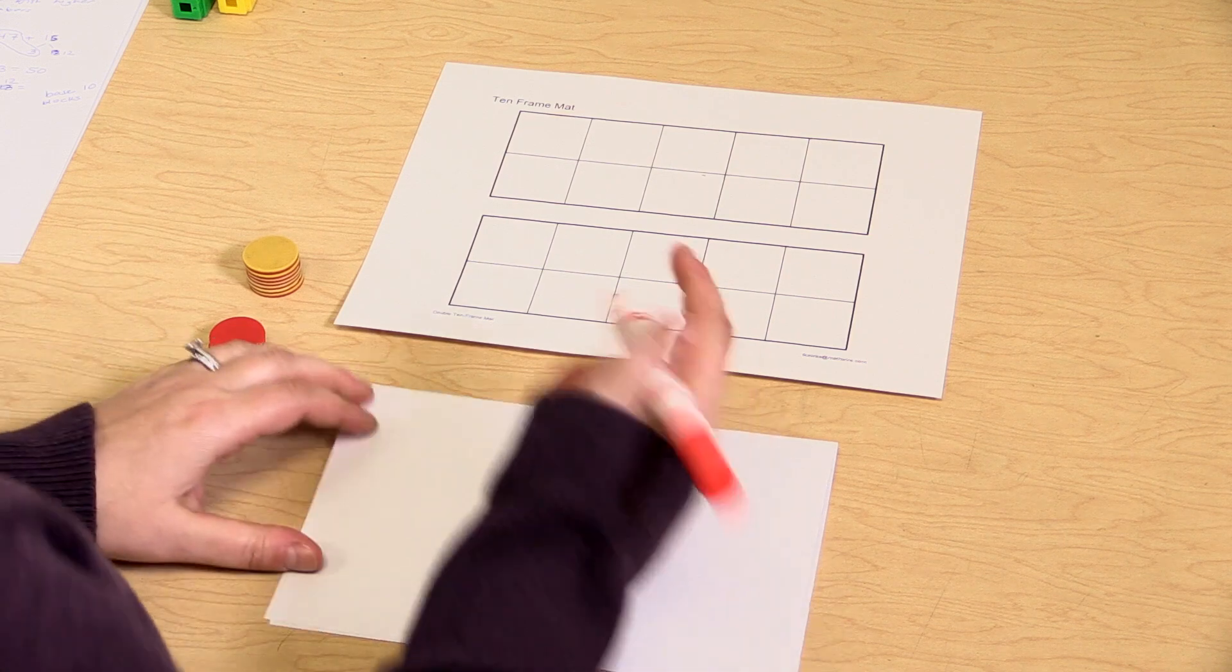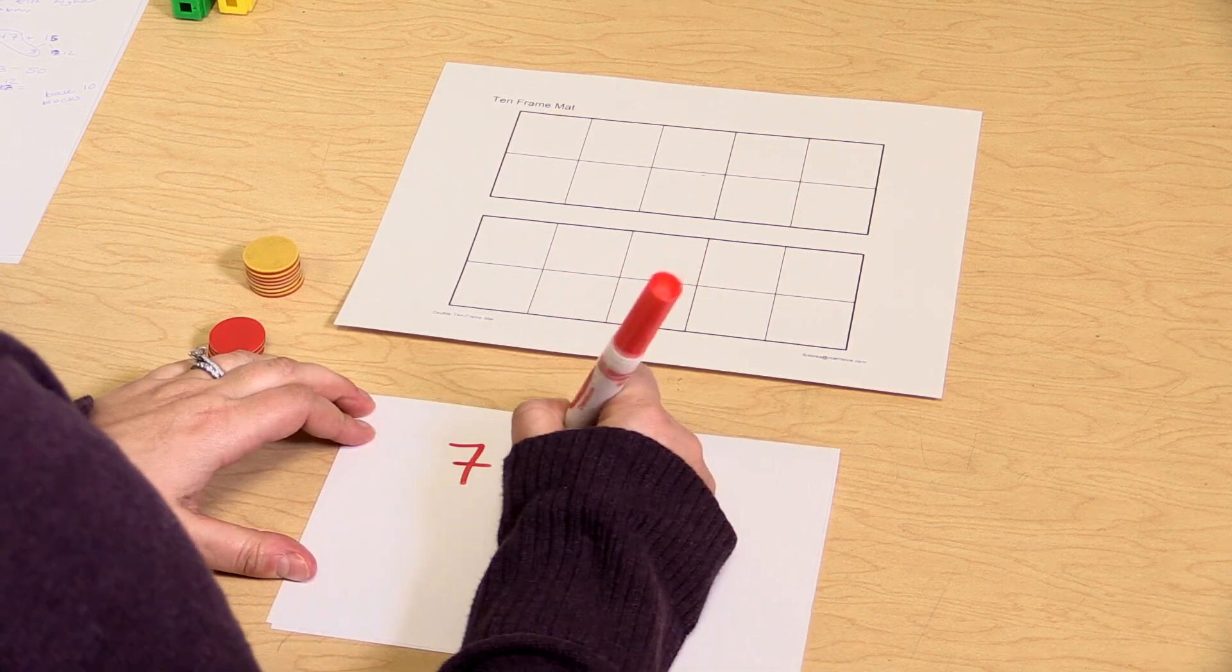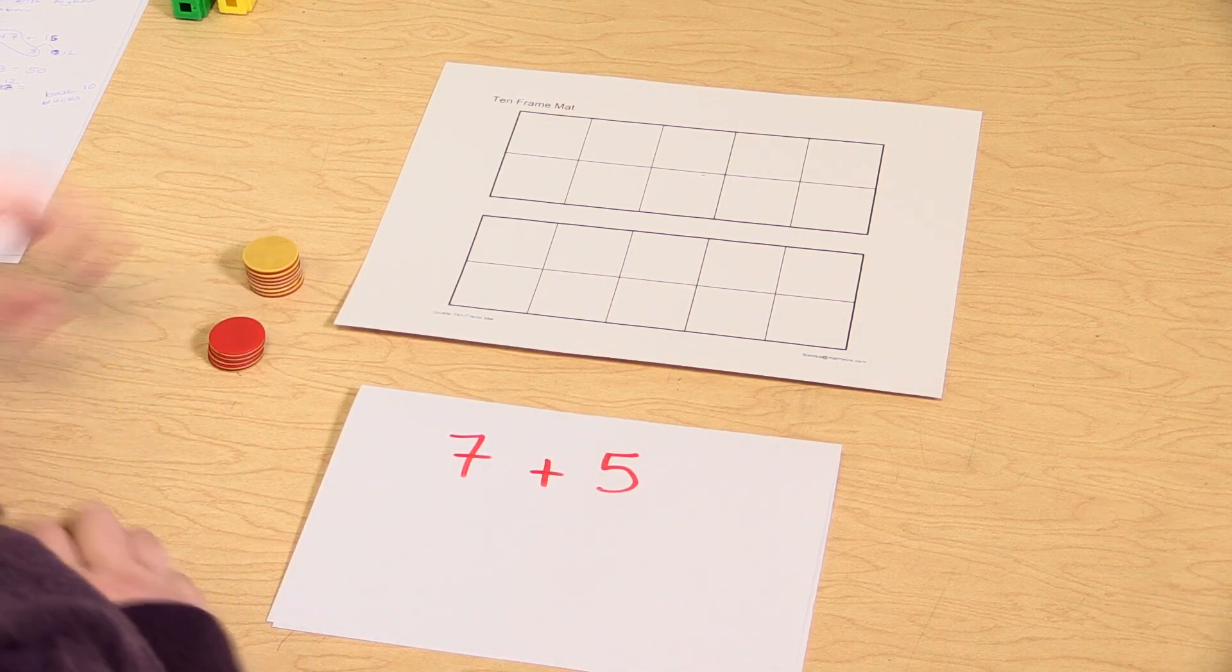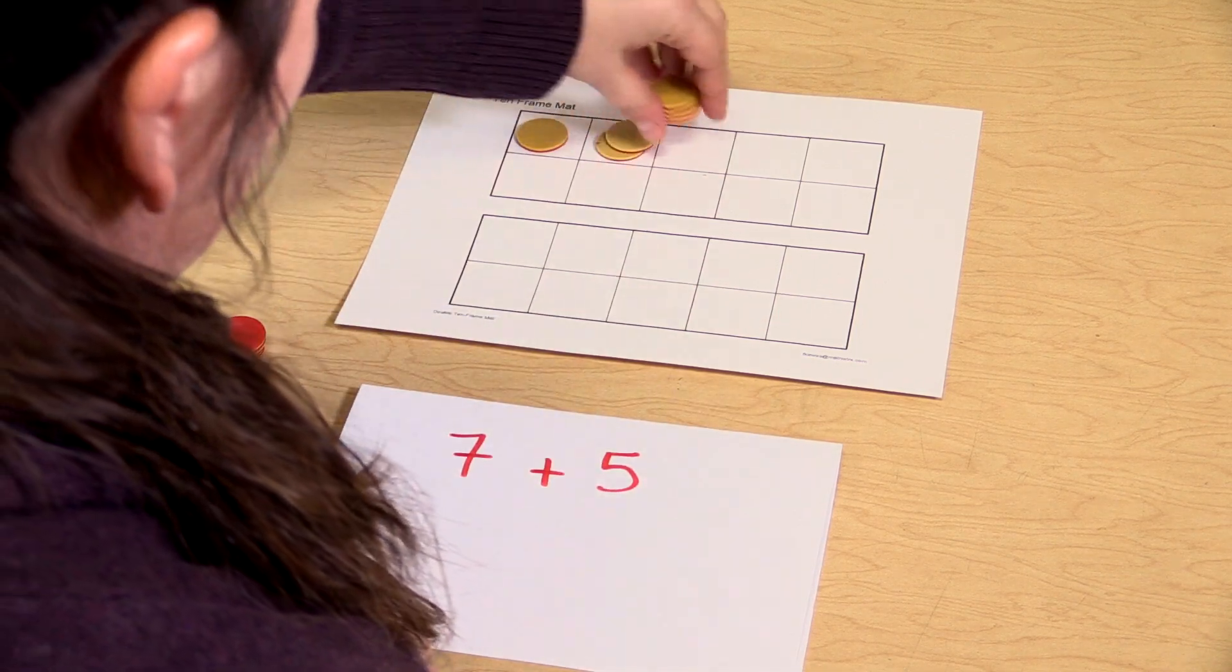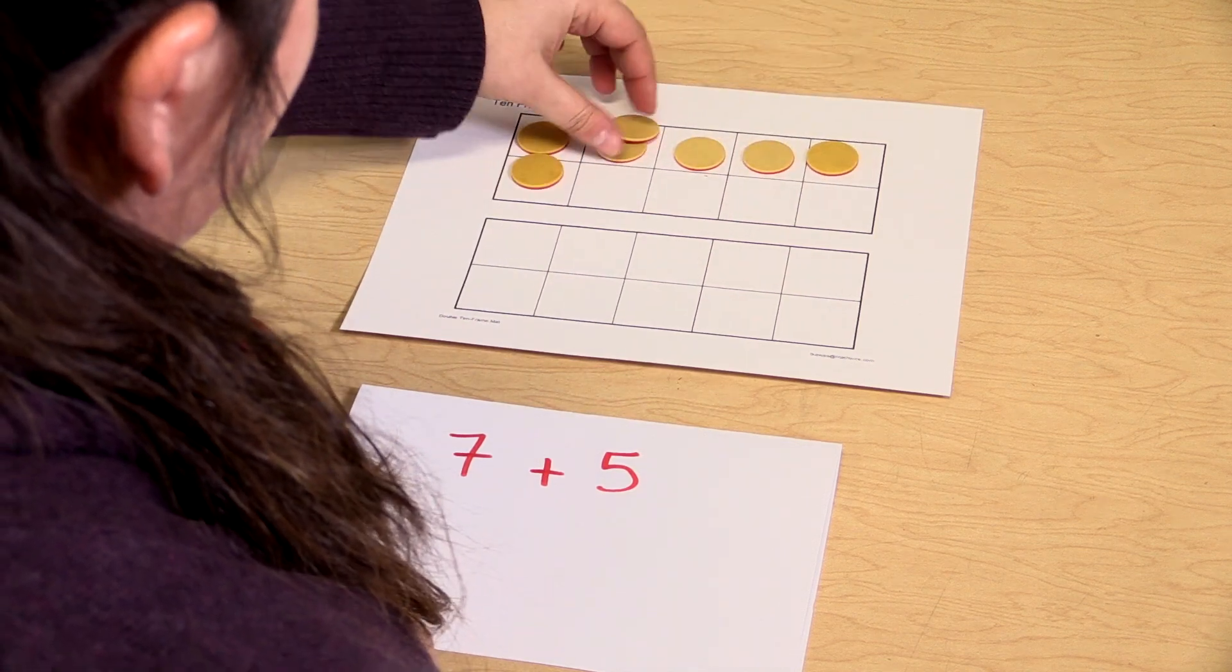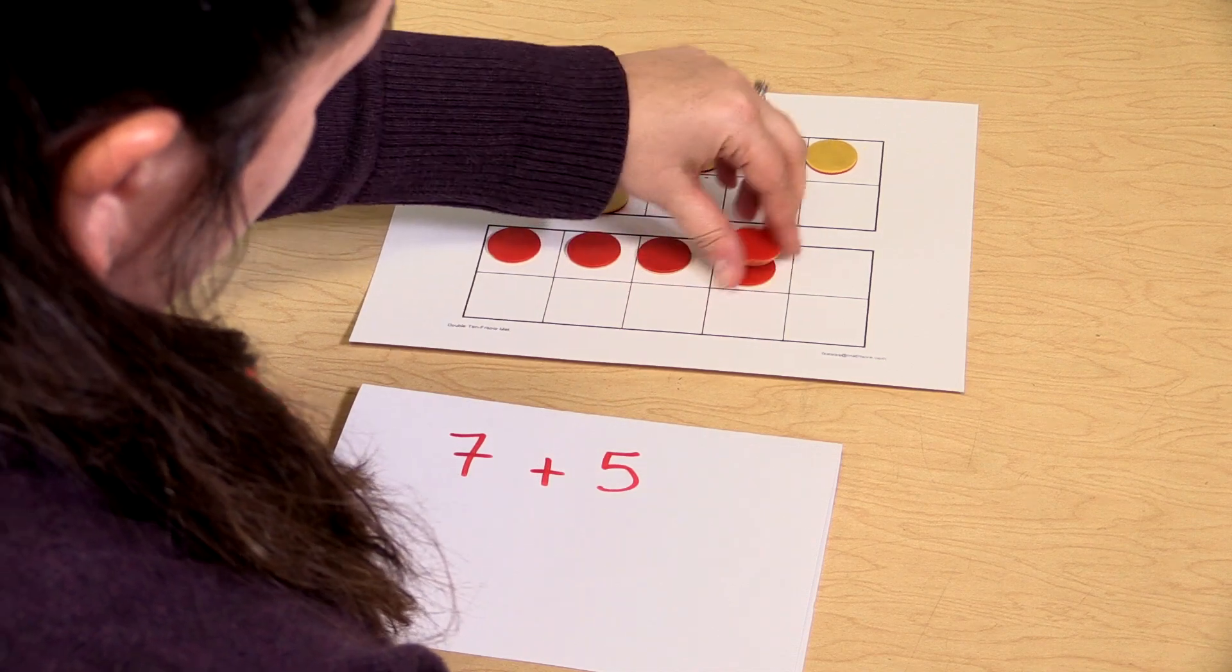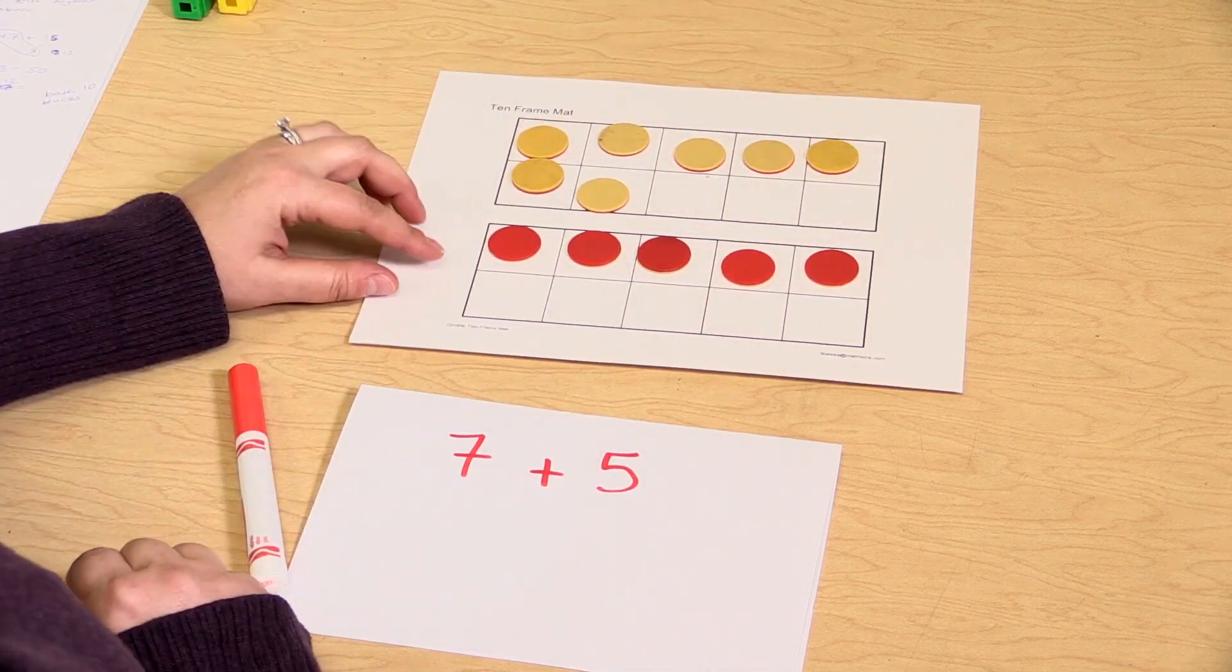So for example, if a student wanted to add seven plus five, they might use this ten frame and put out seven chips, and then five chips, and they would have seven plus five.